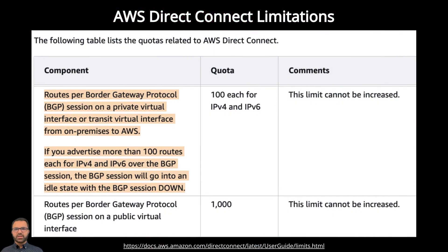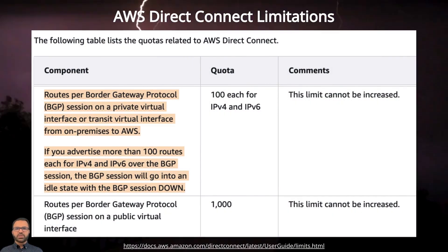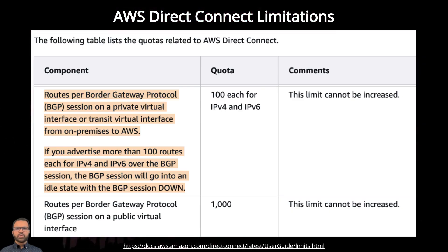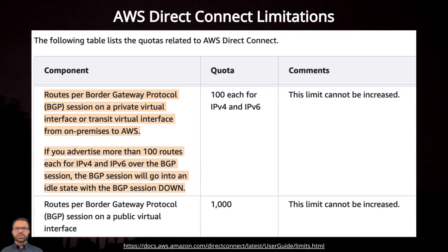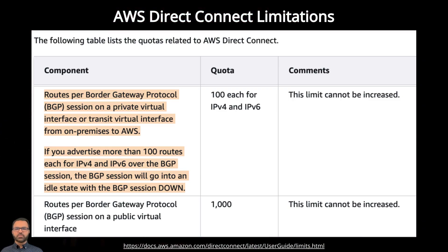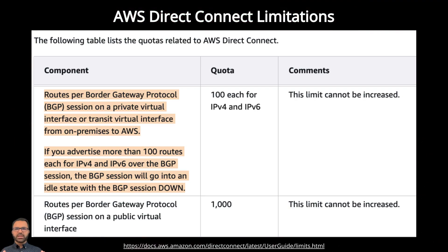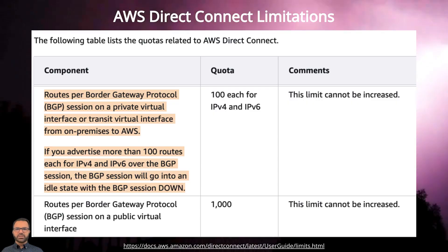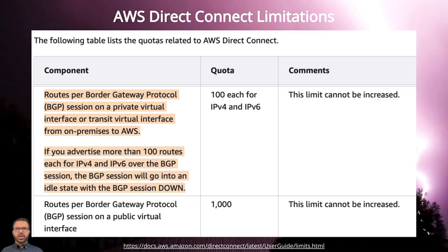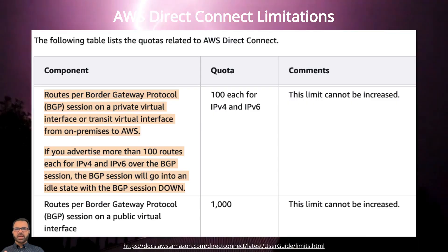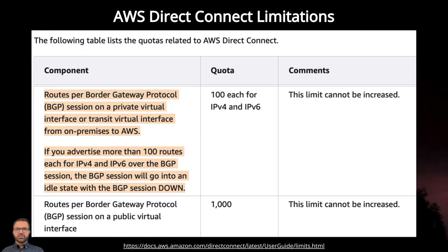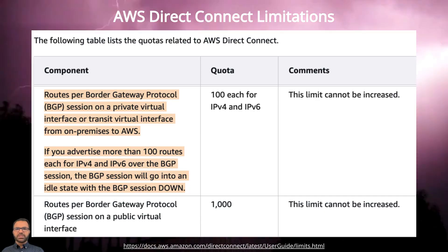Here's the scenario. You're about to launch a groundbreaking project in AWS and Azure clouds. But you come to know that AWS can only support 100 BGP routes from the on-premise data center to the AWS cloud over the AWS Direct Connect circuit. And if you advertise more than 100 routes over BGP, the entire BGP session will go into an idle state with the BGP session down.